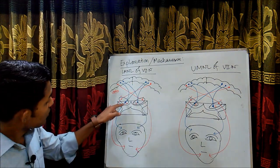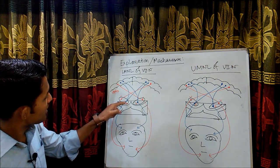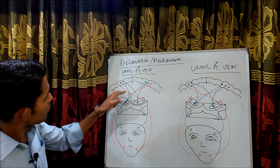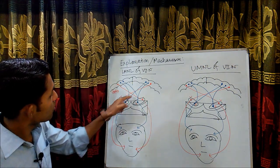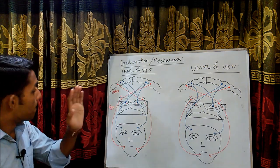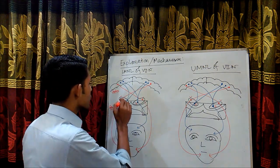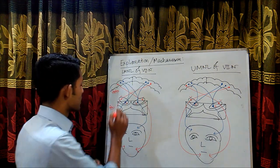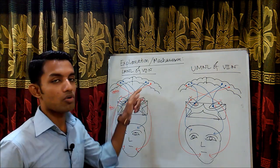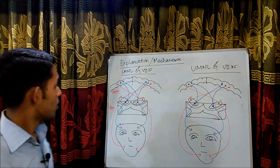Interestingly, this dorsal region gets input from both sides of the cortex — you can see the dorsal region of the facial nerve nucleus getting input from both sides of the cortex. But the ventral region of this nucleus gets input only from the contralateral side.